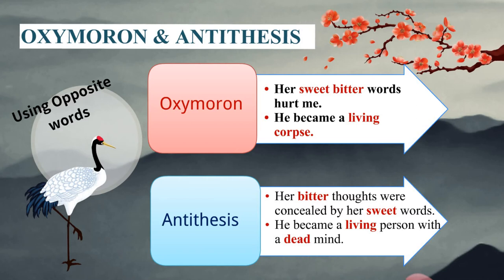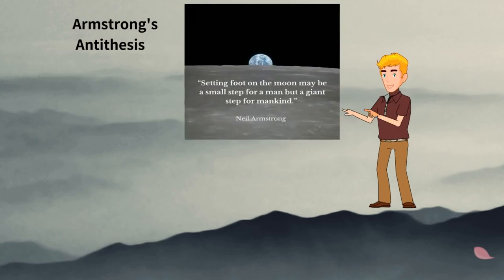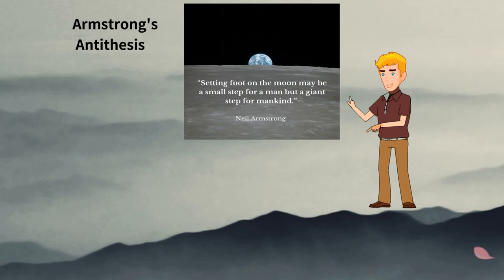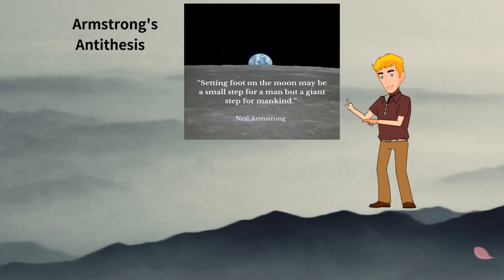In antithesis: 'Her bitter thoughts were concealed by her sweet words.' Here bitter is used for thoughts and sweet is used for words — two different entities, not used in conjunction. Similarly, 'he became a living person with a dead mind' — person is one entity, mind is a second entity. A classic example is Neil Armstrong's words: 'Setting foot on the moon may be a small step for a man, but a giant step for mankind.' Man and mankind are two different entities — small step for man, giant step for mankind.